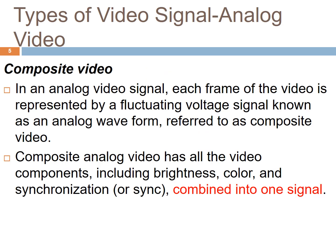Video can be produced either in analog or digital form. In an analog video signal, each frame of the video is represented by a fluctuating voltage signal known as an analog waveform, referred to as composite video. Composite analog video has all the video components, including brightness, color, and synchronization, combined into one signal.